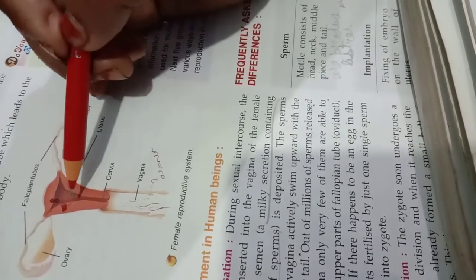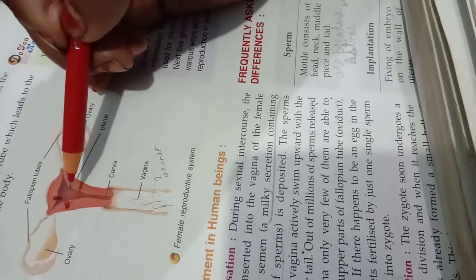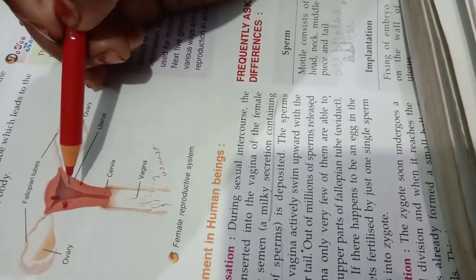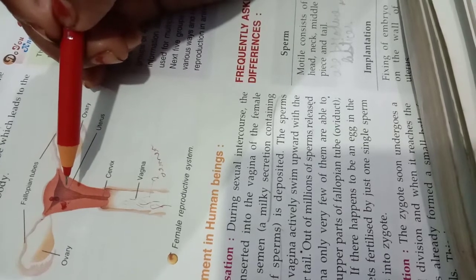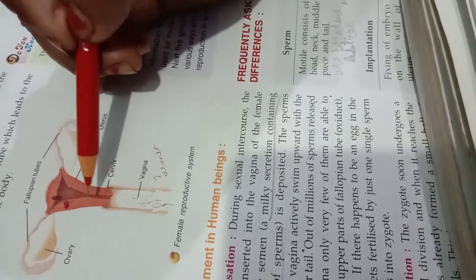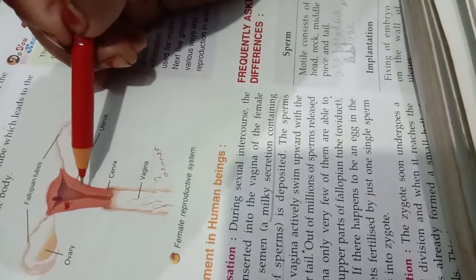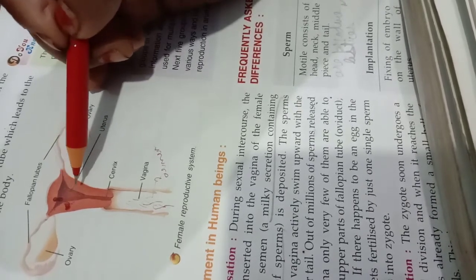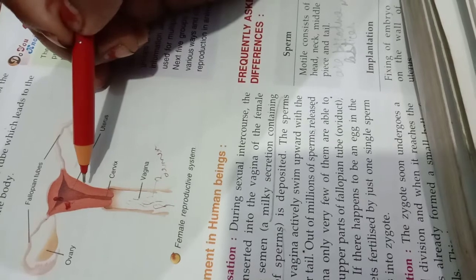For human being, it takes 9 months or 280 days. So if you are asked, what is gestation? It is the time period of the development of the embryo to a full-grown, that is a fetus, which takes about 9 months or 280 days. Now after the fetus has developed fully.